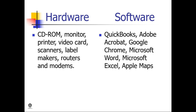Examples of hardware are CD-ROM, monitor, printer, video card, scanners, label makers, routers, and modems. Examples of software are QuickBooks, Adobe Acrobat, Google Chrome, Microsoft Word, Microsoft Excel, and Apple Maps.